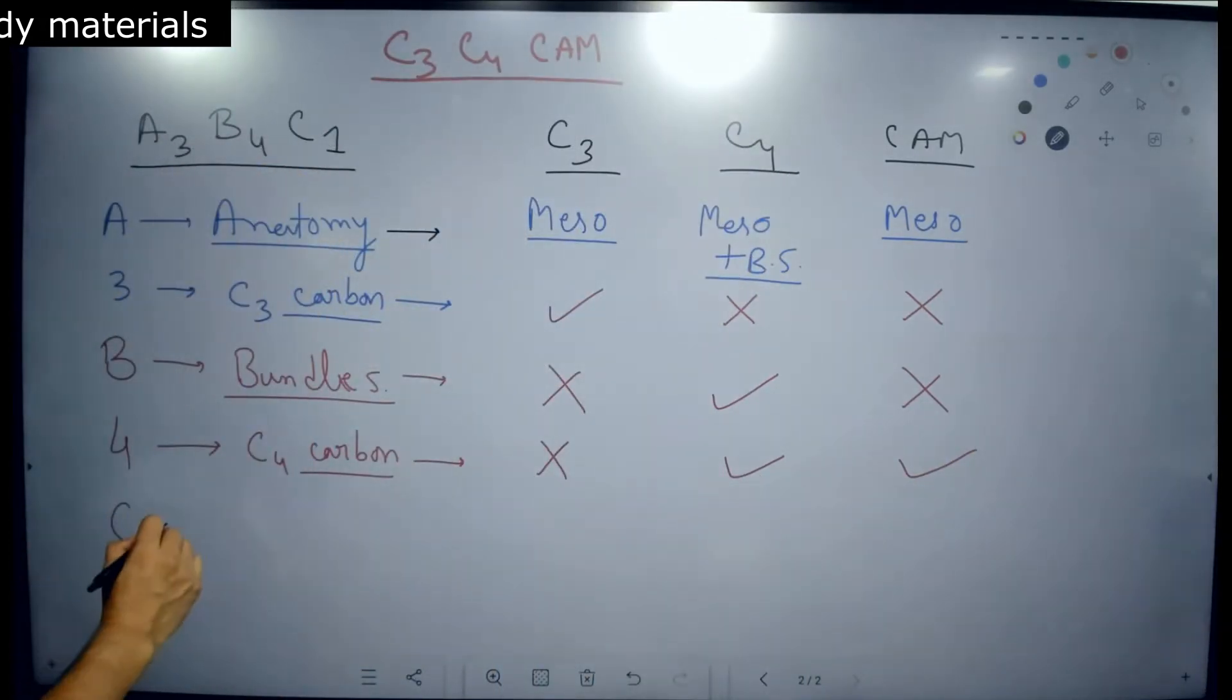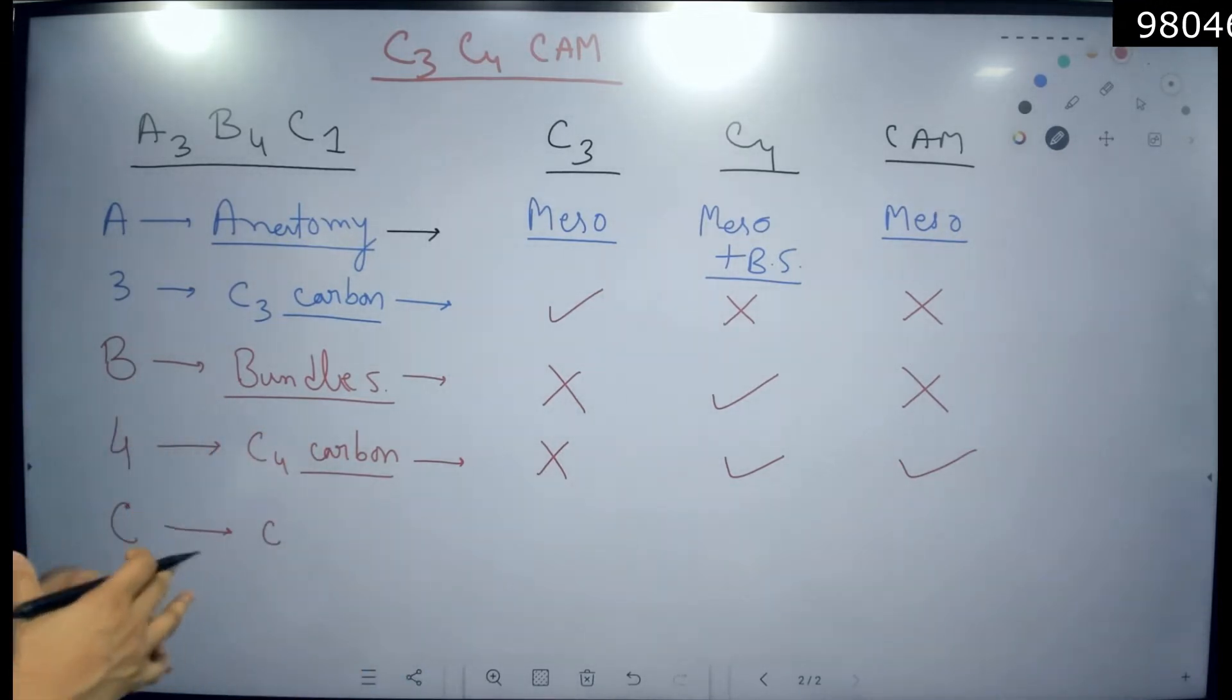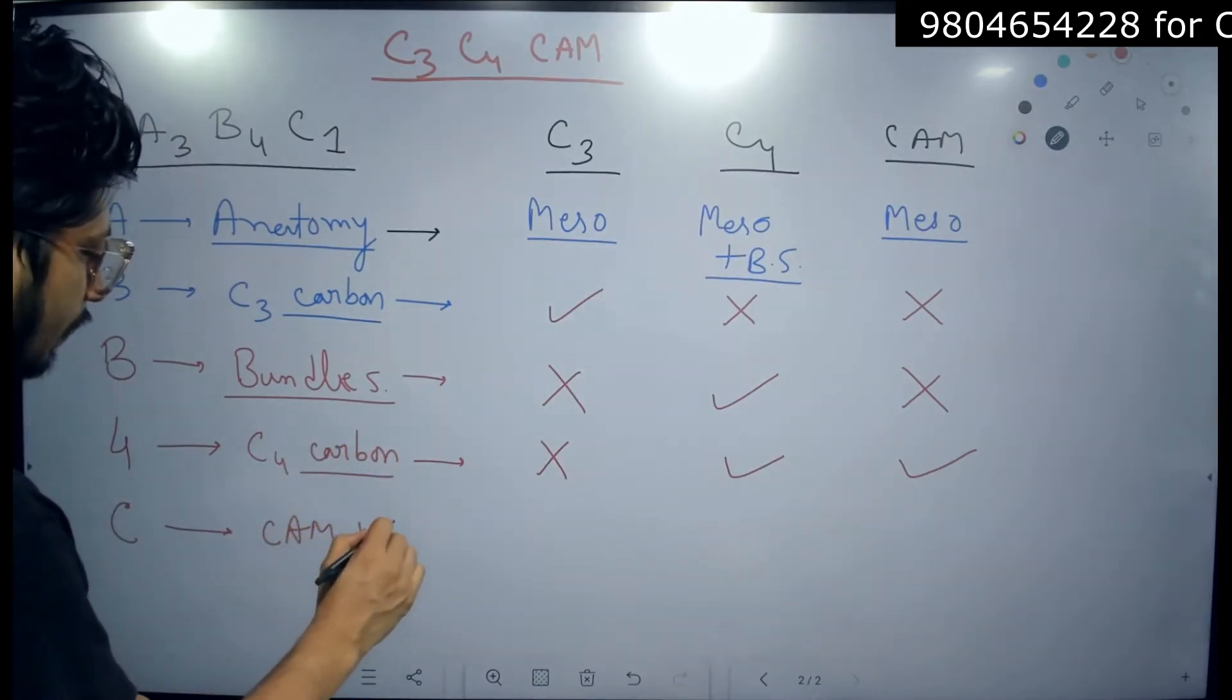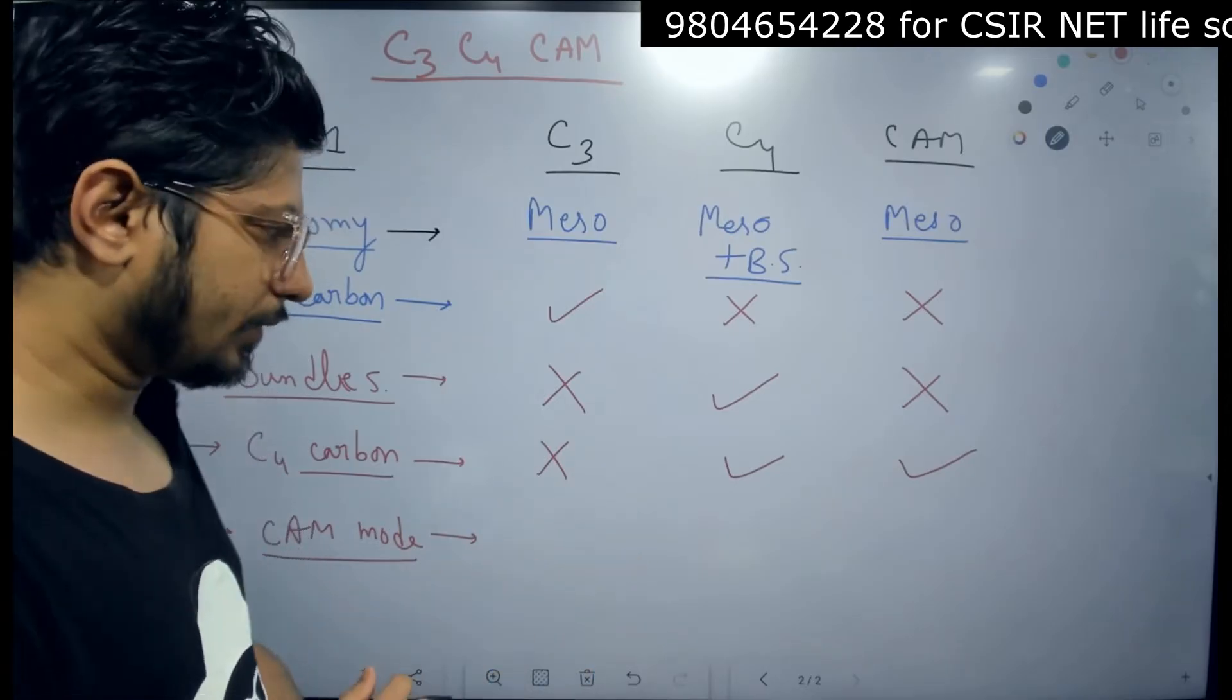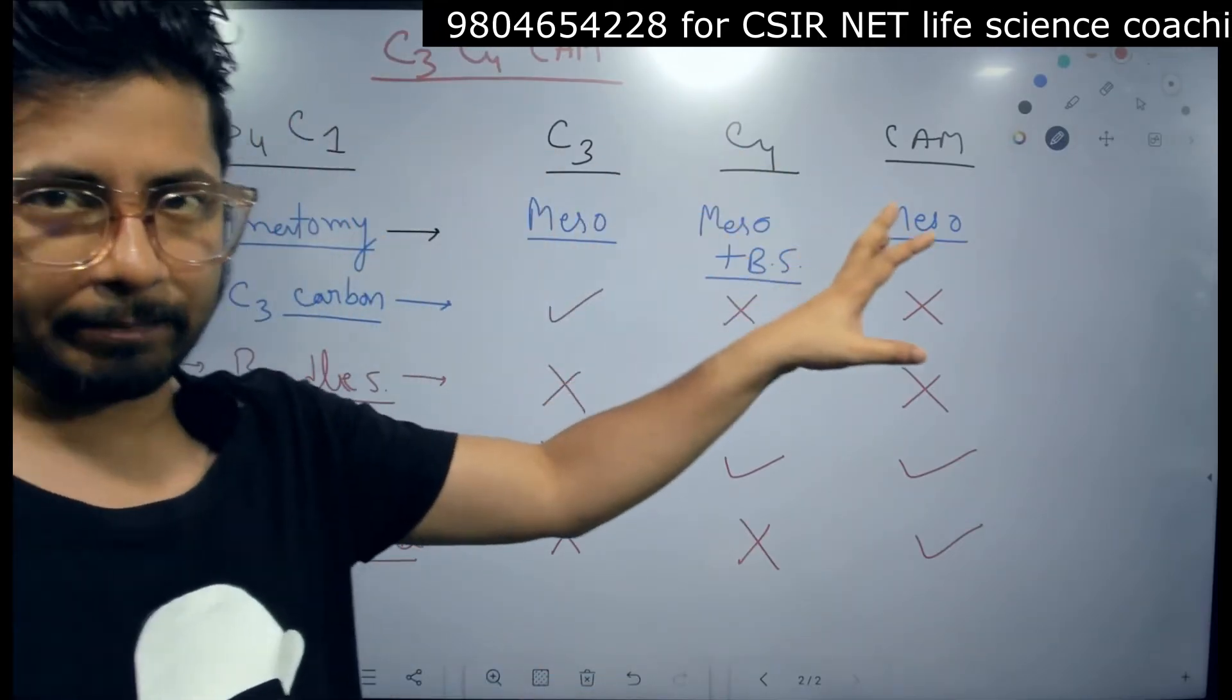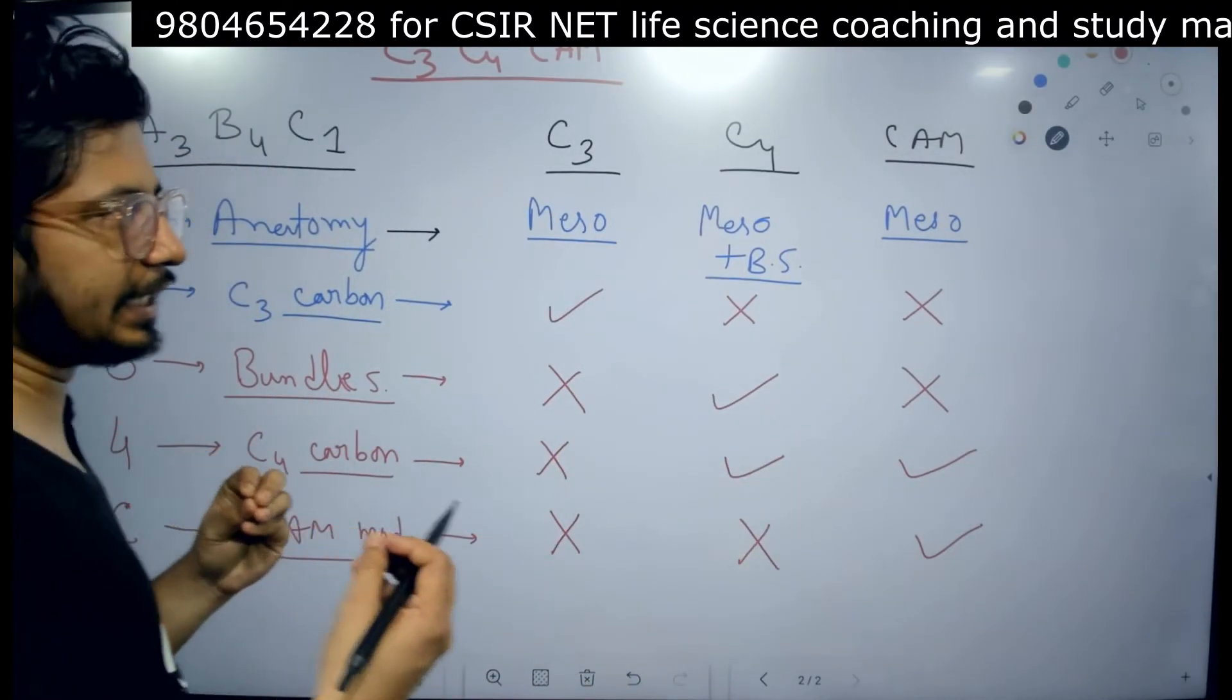The last one is C. And we are very close. That is C for CAM. Actually the C is crassulacean acid metabolism. So basically whether they follow the crassulacean mode of metabolism in the plant or not. Basically follow CAM mode or CAM mode of carbon dioxide fixation by temporal isolation. The answer is no for C3 plants, no for C4 plants, but yes for CAM plants. That is why they are called as CAM plants - crassulacean acid metabolism following plants.